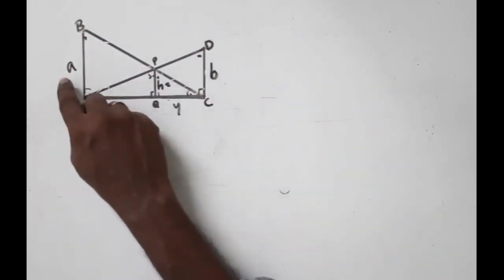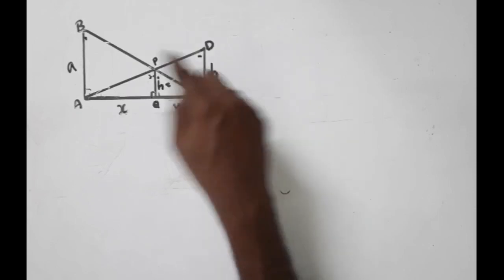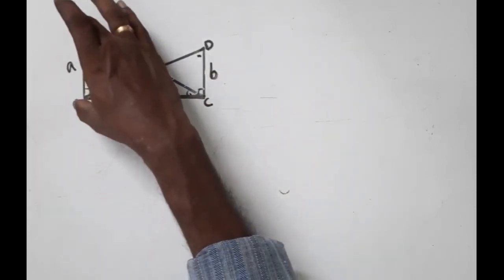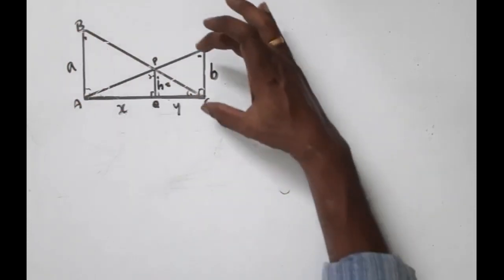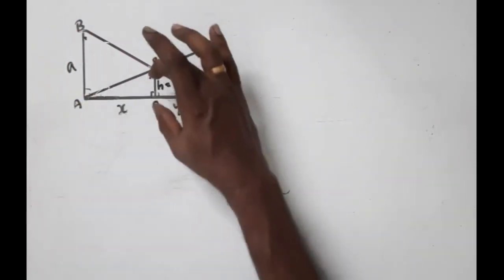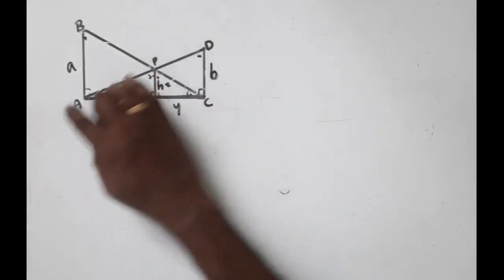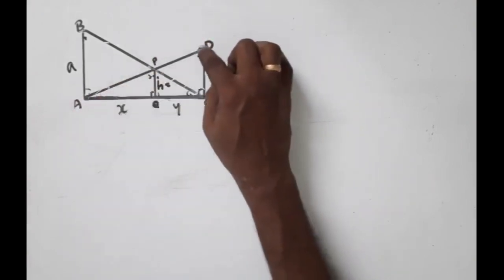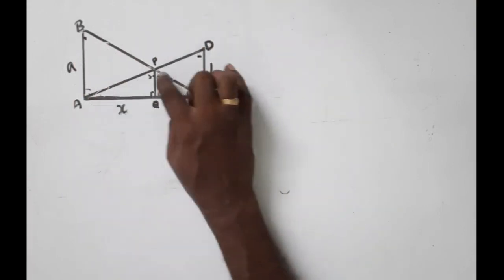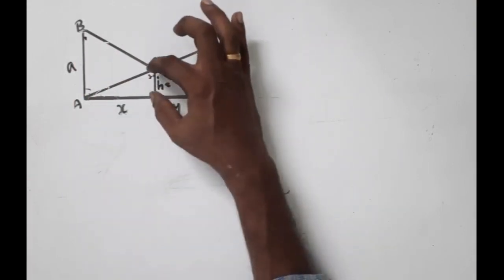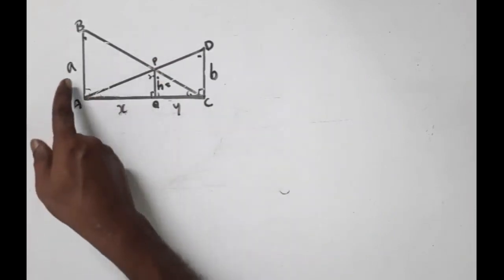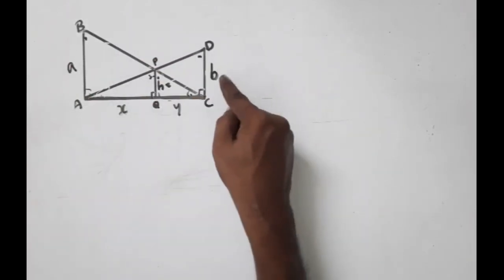So when one pole is 2 meters and the other is 3 meters, the height H equals 1.2 meters. This height is the height above the ground where the ropes cross each other.